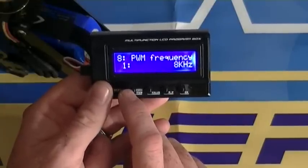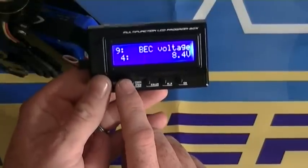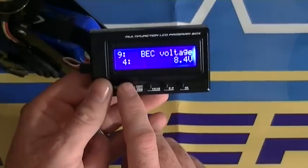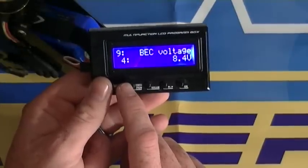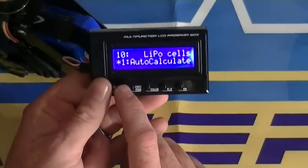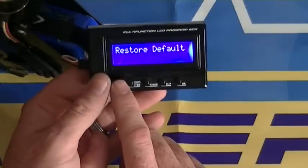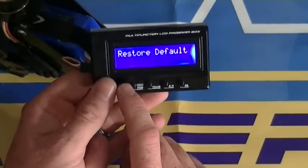ESC is cool. BEC voltage is based on what your servos can handle, obviously. Auto calculate cells I always leave that just the way it is. And restore default, if you screw anything up, you can always hit this and start over again.